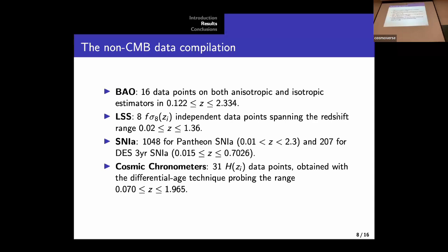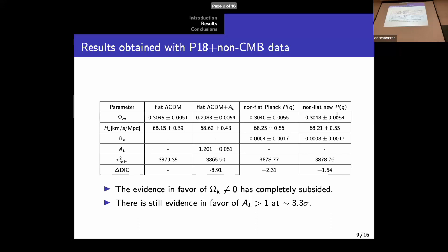Now it is time to include in the analysis some non-CMB data. We consider a compilation made by DES from baryon acoustic oscillations and isotropic observables, large-scale structure data, supernova, and also cosmic chronometers. So if we have a look at the results that we obtain when we analyze this dataset, the first thing that draws our attention is that the evidence in favor of curvature has completely disappeared. The minimum value for the chi-square is almost the same as for the flat lambda CDM. So this means of course that they are not strongly favored. Actually, it is the flat lambda CDM model, the one that is preferred according to the statistical criteria.